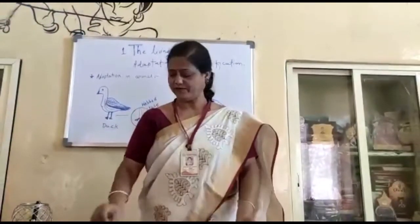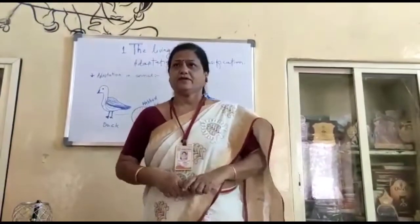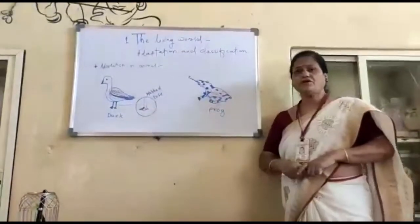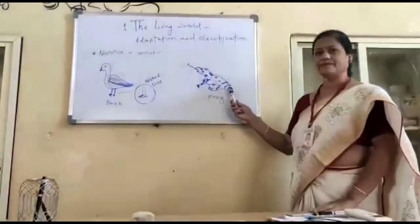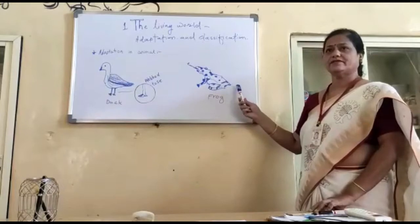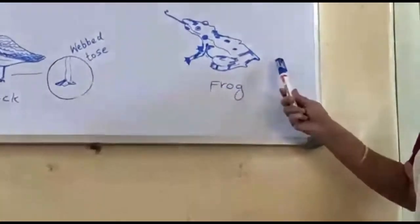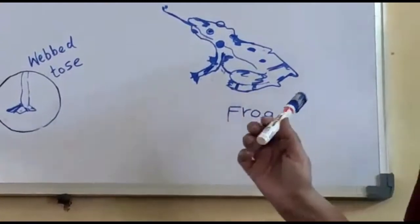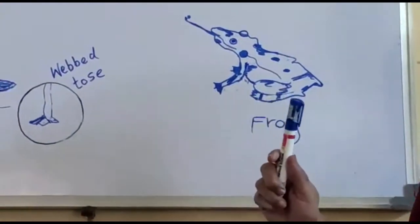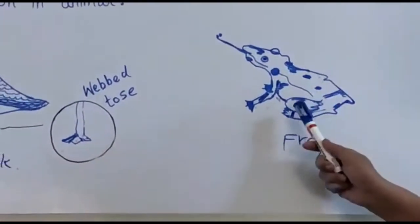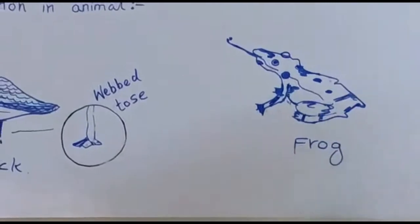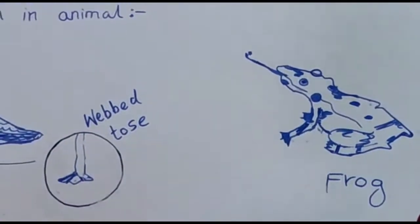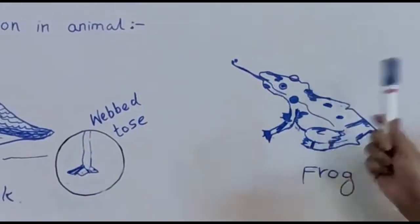Adaptation in amphibians: The frog is an amphibian. It inhabits both land and water. Being a true amphibian, it can breathe in water with the help of its skin, and when on land, it breathes through its nose and lungs.